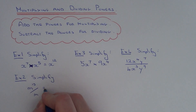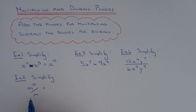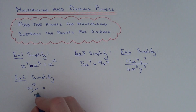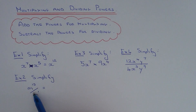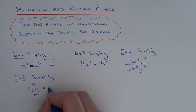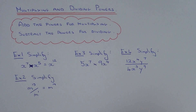So let's move on to example two. This time we need to simplify m to the power of fifteen divided by m. Now this here is just m to the power of one. We are dividing the two terms, so we need to take away the powers. Fifteen take away one is fourteen, so our final answer will be m to the power of fourteen.